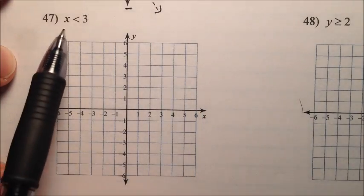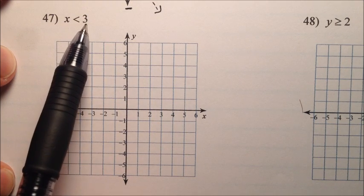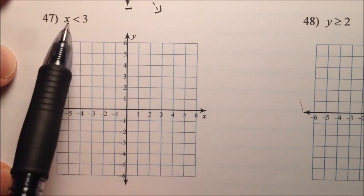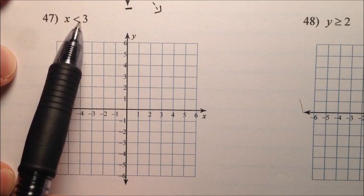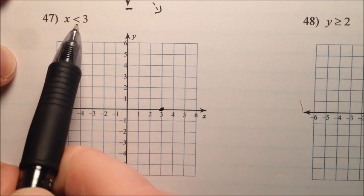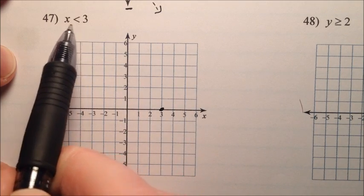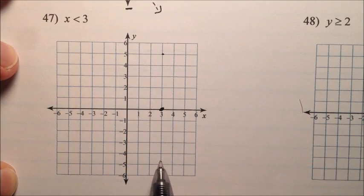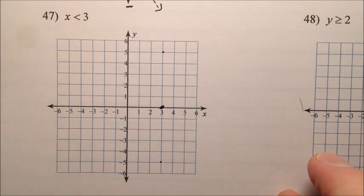On number 47 we have x is less than 3. So we're dealing with just the x axis here, and we know that the line x equals 3 is actually a vertical line. So the x intercept will be at 3, and it's just less than, not equal to as well, so we know it's going to be a dashed line. I'll put a couple more points there so we can get an idea of what that looks like.